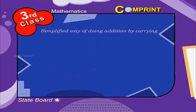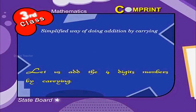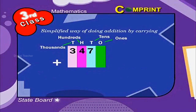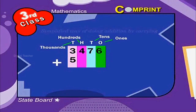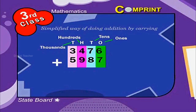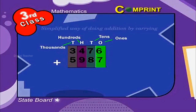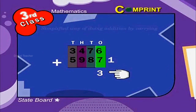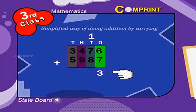Simplified way of doing addition by carrying. Let us add four-digit numbers by carrying. Here is an example: three thousand four hundred and seventy-six plus five thousand nine hundred and eighty-seven. We should arrange the numbers in their place values first. Step 1: add the ones place — six plus seven. We get 13. Carry the digit one of the tens to the tens place.